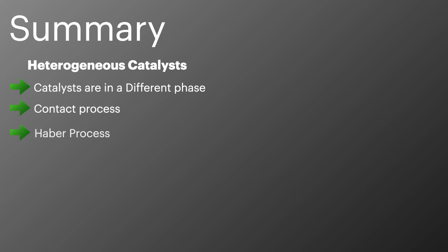In summary then, heterogeneous catalysts are in a different phase of their reactants. Examples we've looked at today include the contact process and the harbour process. They often use a support medium to maximise their effectiveness whilst keeping the costs down and the catalyst can be poisoned with impurities.